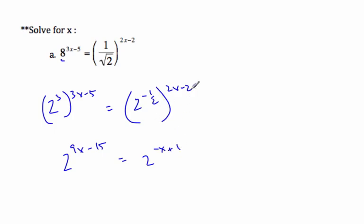A half times 2 is 1. Now again, if these are going to be equal, then I know that 9x minus 15 equals negative x plus 1.